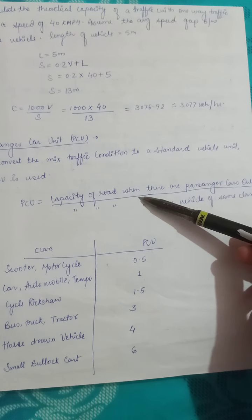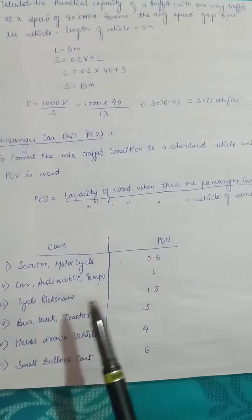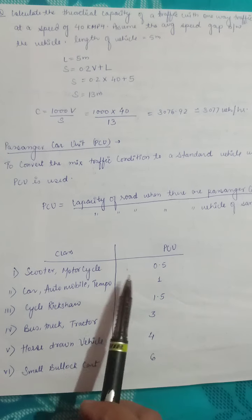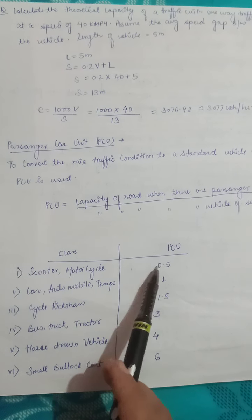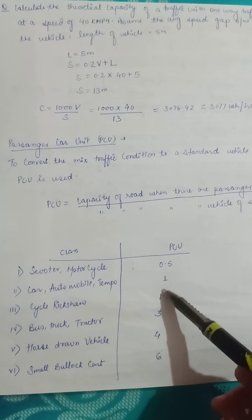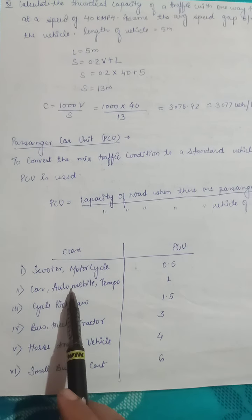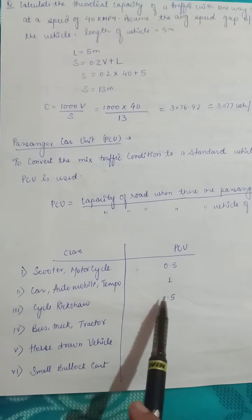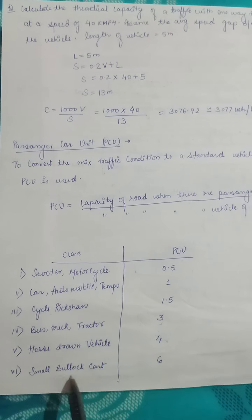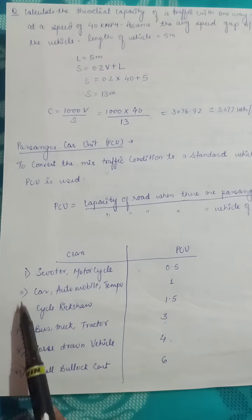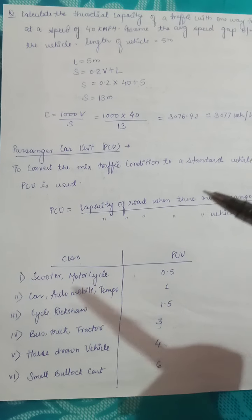PCU is defined as: capacity of road when there are passenger cars only, divided by capacity of road when there are vehicles of the same class. Each class of vehicle is assigned a PCU value: scooter or motorcycle = 0.5; car, automobile or tempo = 1 PCU; cycle rickshaw = 1.5; bus, truck and tractor = 3; horse-drawn vehicle = 4; small bullock cart = 6. All vehicle classes are thus converted into passenger car units so we can design for mixed traffic conditions.